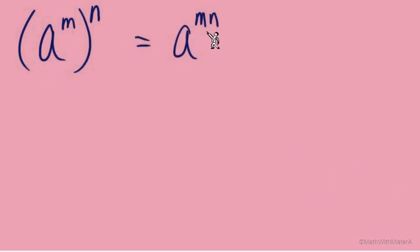Let's state this rule using variables. If we have an expression a to the power of m in parentheses with an exponent of n outside, what does it equal? Since the base is a, we multiply those two numbers together: a to the power of m times n. Those two numbers multiplied together give us our new exponent.